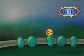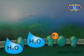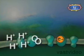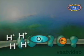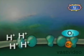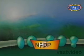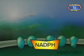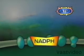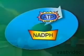Molecules of water are split. The oxygen from these molecules is released into the atmosphere. Hydrogen ions are used to convert molecules of NADP into molecules of NADPH.